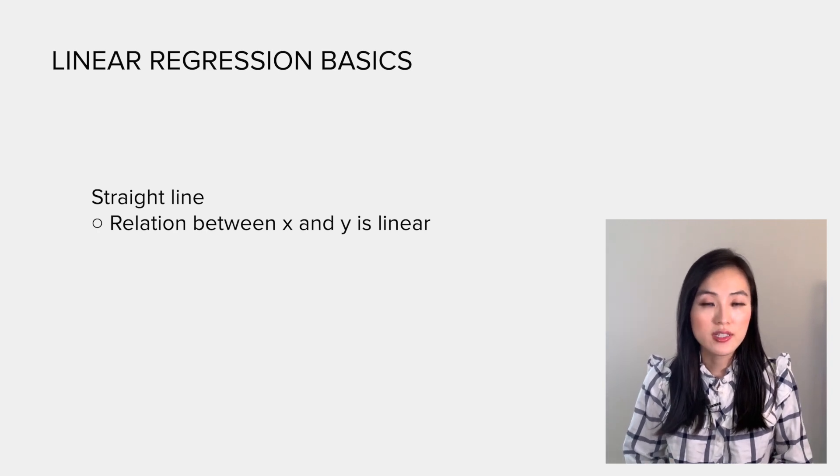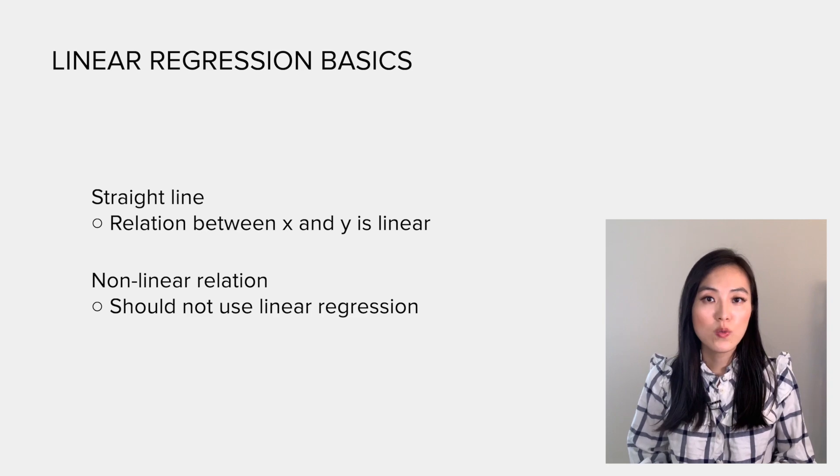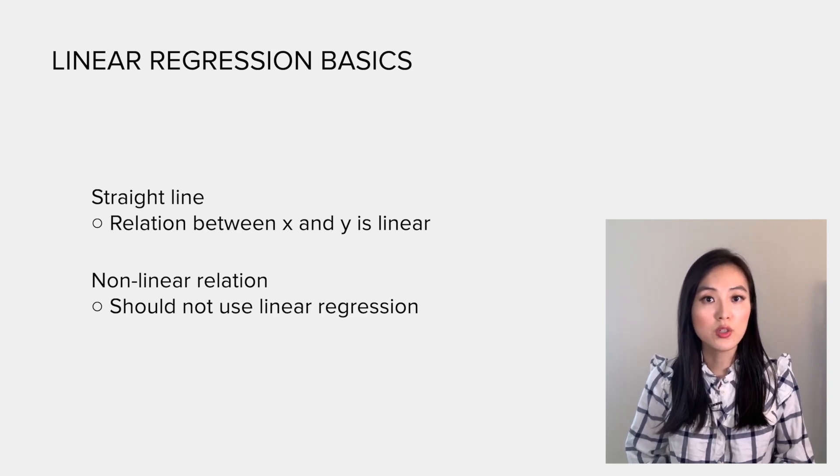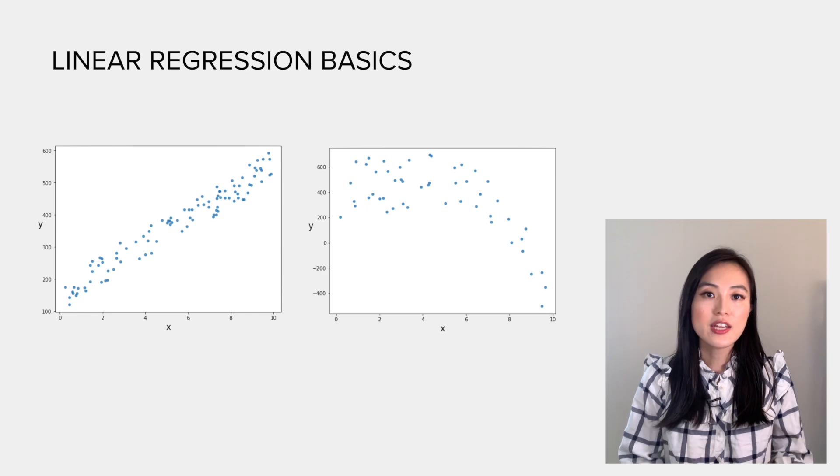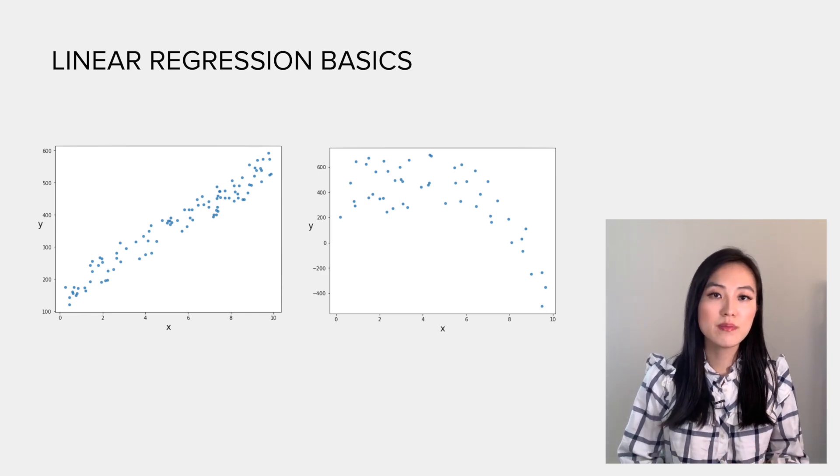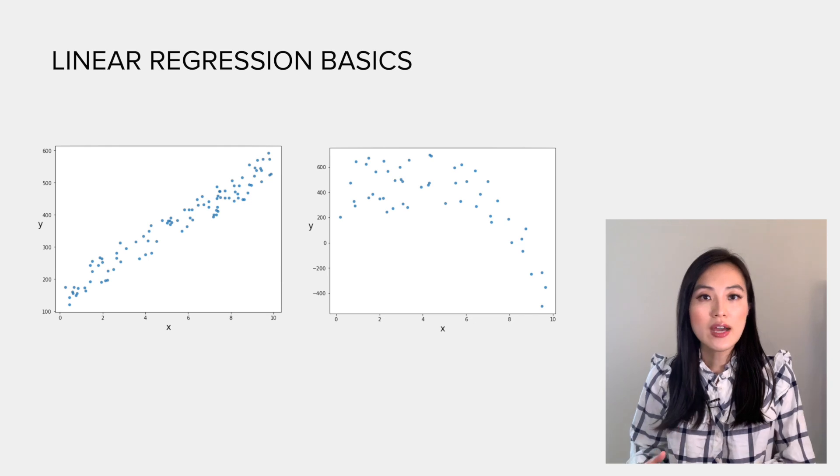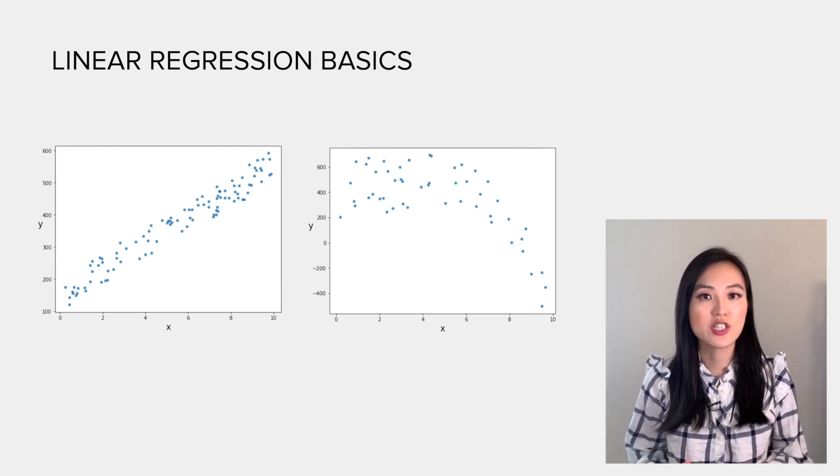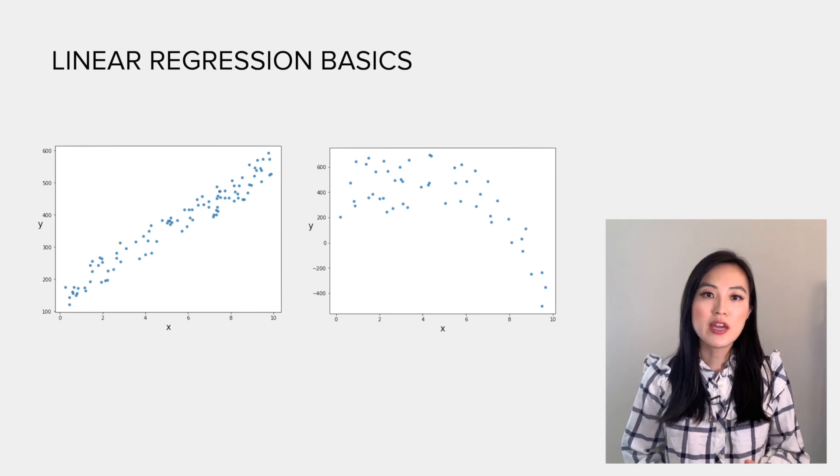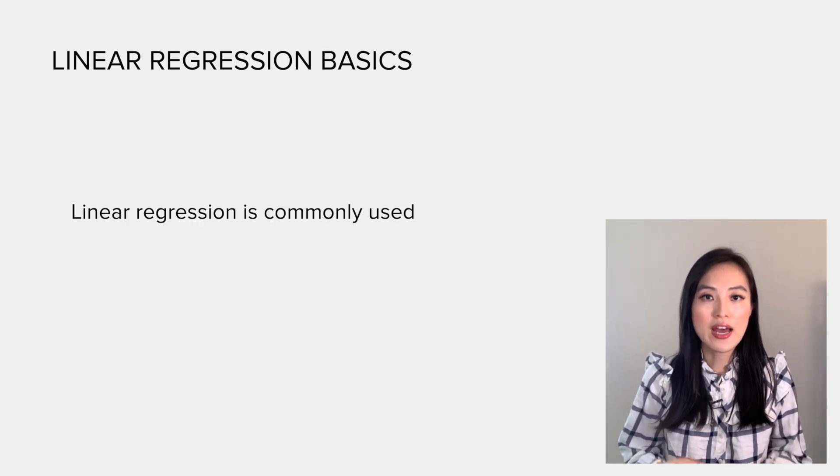This is an important assumption. If the underlying relationship is non-linear, we should not use linear regression to model the data. Now let me show you two examples. In the left plot, it's clear that the relation between x and y can be considered as linear, while in the right graph, assuming x and y have linear relationship would not make much sense.